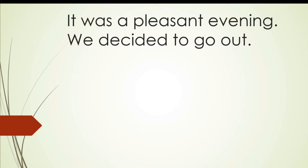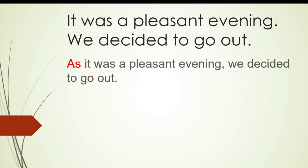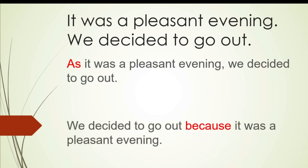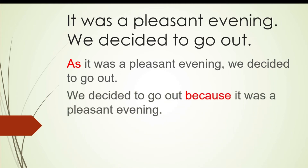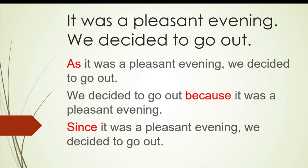We have two sentences here: 'It was a pleasant evening' and 'We decided to go out.' There is a cause and effect relationship between these two sentences, and we can connect them using a conjunction or a transitive adverb. For example: 'As it was a pleasant evening, we decided to go out.' We can also express the same idea using since or because: 'We decided to go out because it was a pleasant evening.' The because clause can also go at the beginning: 'Because it was a pleasant evening, we decided to go out.'